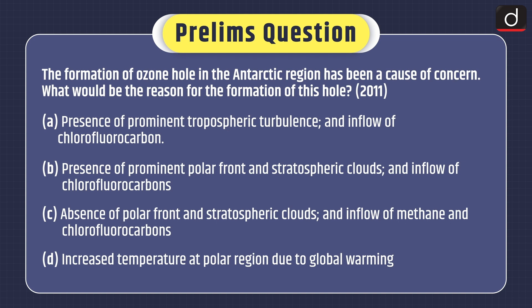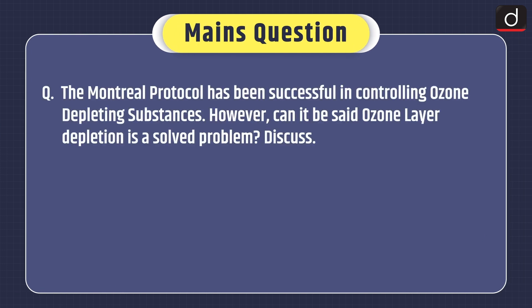Now moving on to practice questions. First, a prelims question asked in the 2011 exam: 'The formation of ozone hole in the Antarctic region has been a cause of concern. What would be the reason for the formation of this hole?' Options include: presence of prominent tropospheric turbulence and inflow of chlorofluorocarbons; presence of prominent polar front and stratospheric clouds and inflow of chlorofluorocarbons; absence of polar front and stratospheric clouds and inflow of methane and chlorofluorocarbons; or increased temperature at polar region due to global warming. The mains question asks: 'The Montreal Protocol has been successful in controlling ozone depleting substances. However, can it be said ozone layer depletion is a solved problem? Discuss.'